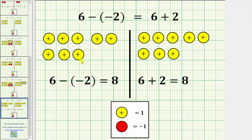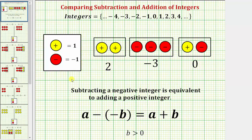Notice how once we remove the two negative chips, we're left with eight positive chips for 6 minus negative 2. And for 6 plus 2, we also have eight positive chips. This shows that 6 minus negative 2 equals positive 8, and so does 6 plus positive 2. So these two examples confirm that a minus negative b equals a plus b. I hope you found this helpful.